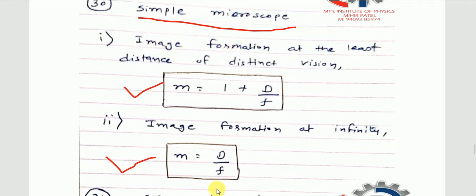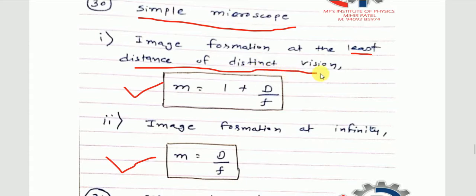Look at image formation over here. There are two cases of image formation — first, at the least distance of distinct vision, and second, at infinity. These are the key words for MCQ solutions.